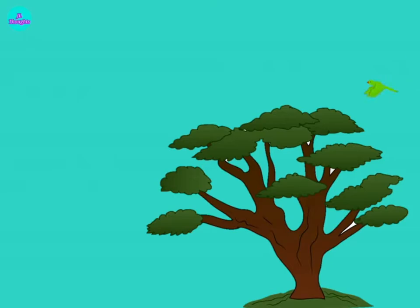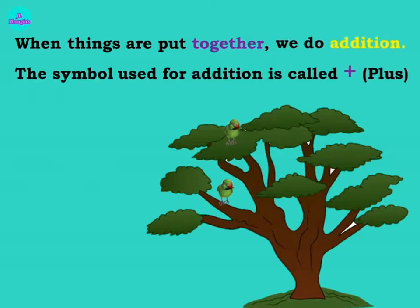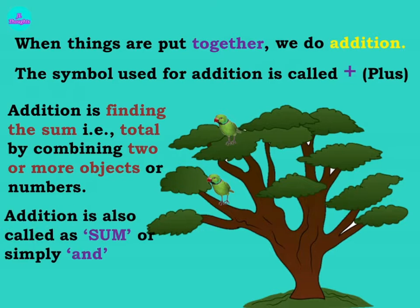Basic Addition. Now what you can see children? One parrot flew and sat on a tree. Now one more parrot came in and sat on a tree. So when things are put together we do addition. The symbol used for addition is called plus. Addition is finding the sum — that is total — by combining two or more objects or numbers. Addition is also called as sum, or simply 'and'.